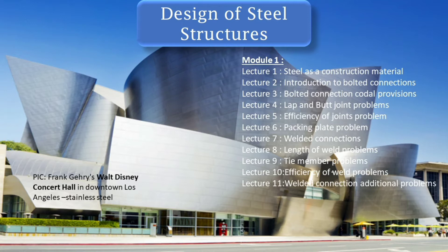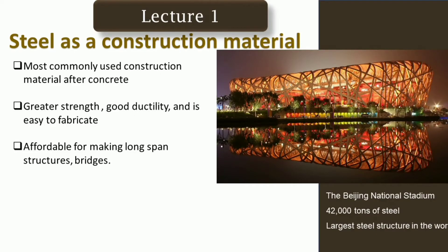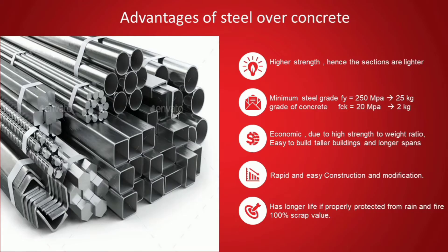In this video I will be delivering Lecture 1: Steel as a Construction Material. I will be talking about why steel is a construction material and its importance and advantages. Steel is the most commonly used material right after concrete, because of its strength, ductility, and ease of fabrication. It is also affordable for making long-span bridges and other structures because of ease in construction and easy-to-maintain connections.